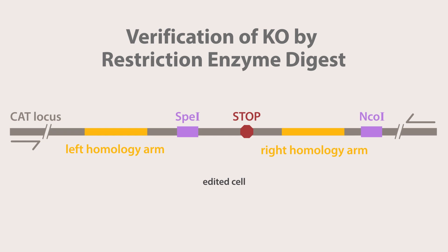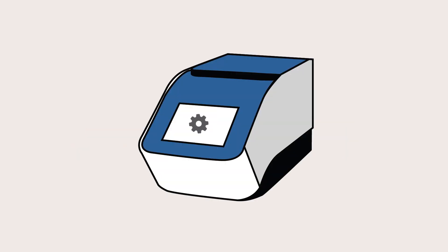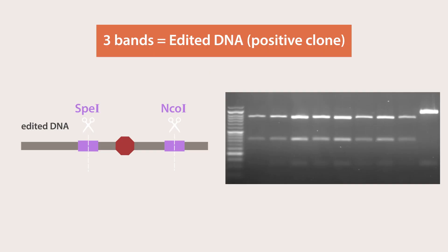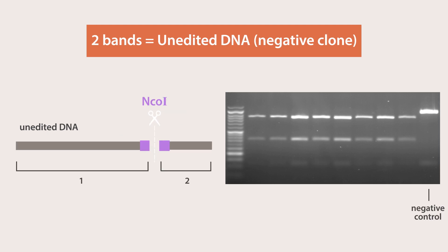Successfully edited transformants are also verified by Restriction Enzyme Digest using the unique SPE-1 site introduced by the repair template. The target locus is PCR-amplified, then digested using SPE-1 and NCO-1 to reveal a unique digest profile. Three bands are observed to indicate a positive clone, and two bands to indicate a negative clone.